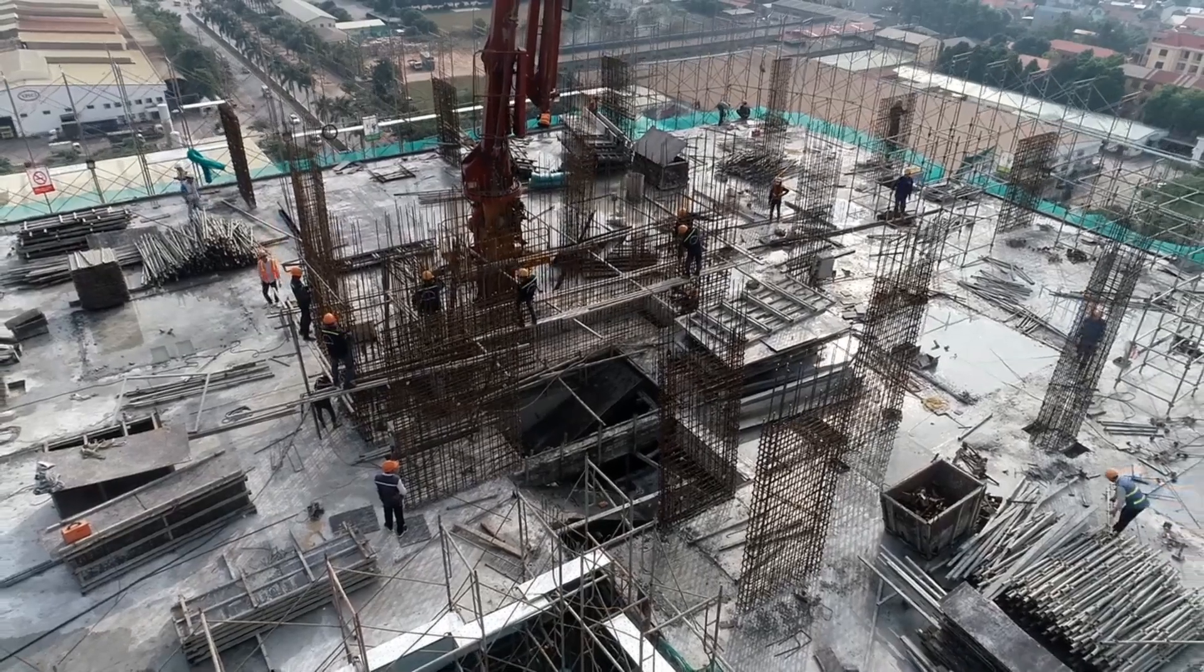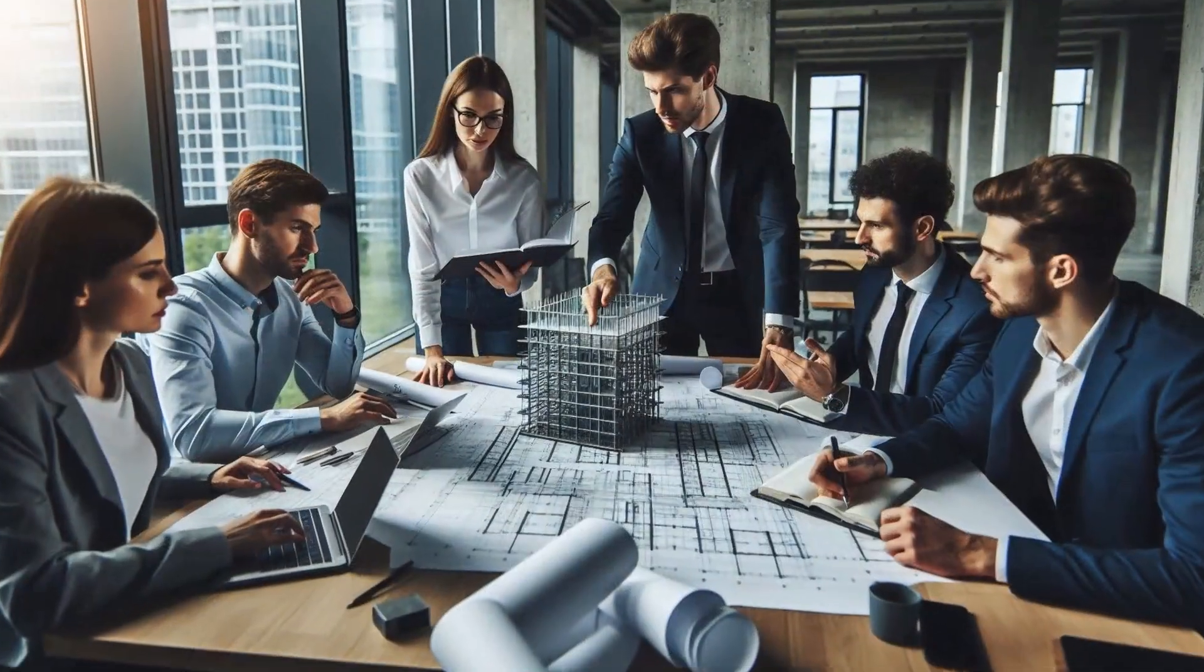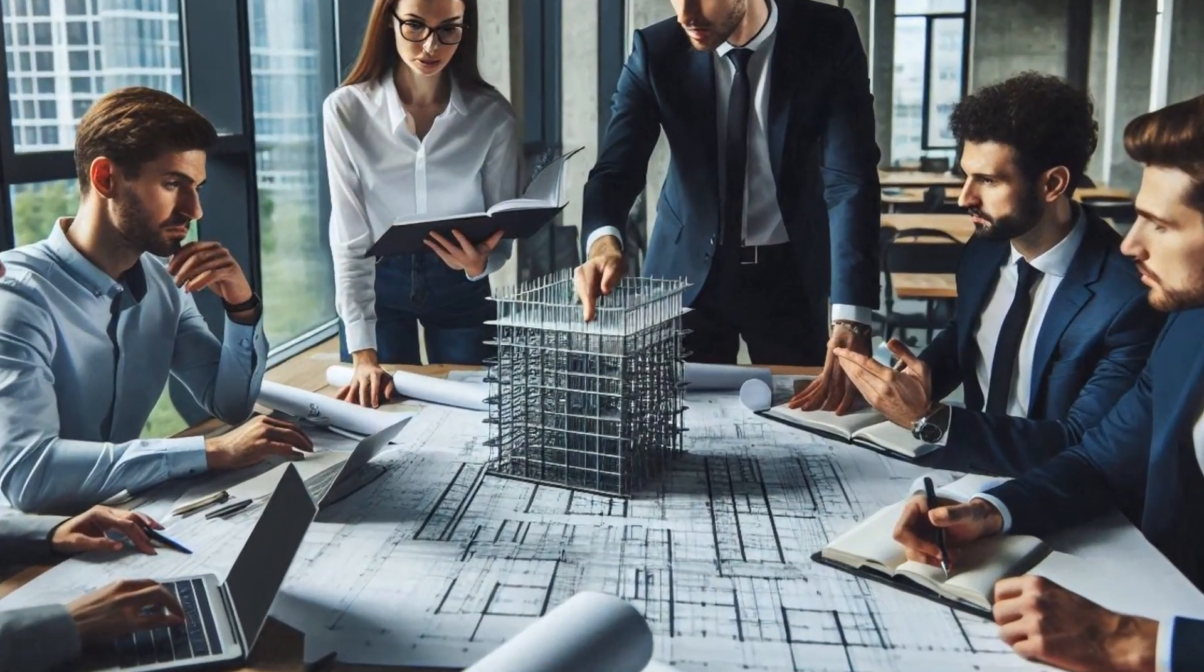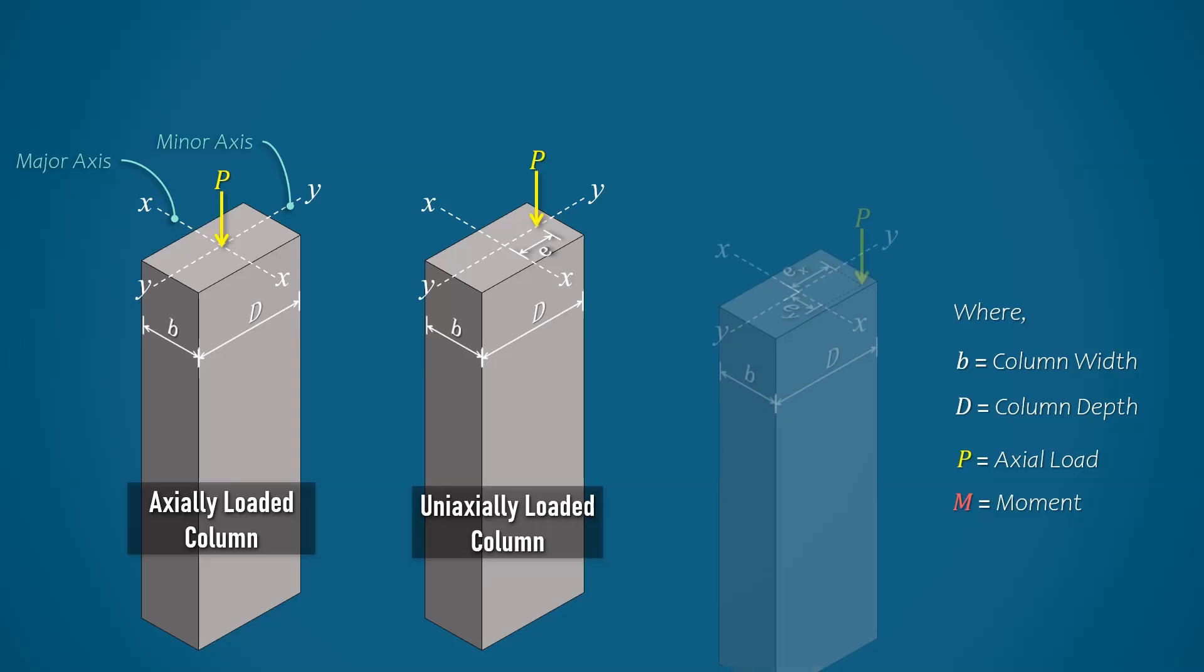During the design of columns in an RCC structure, we need to classify them into three categories based on the types of loading. These three categories are axially loaded columns, uniaxially loaded columns, and biaxially loaded columns.